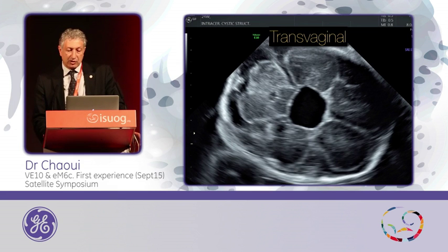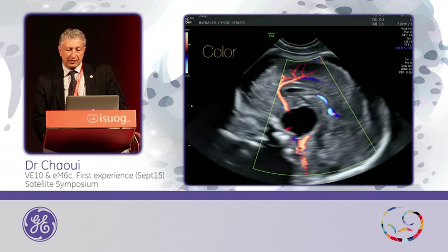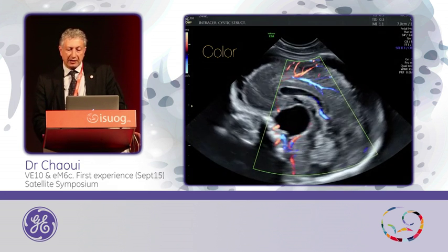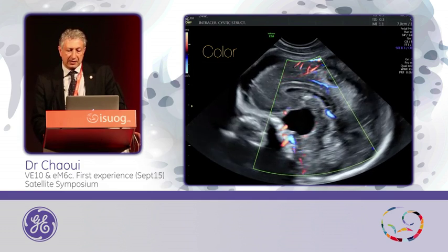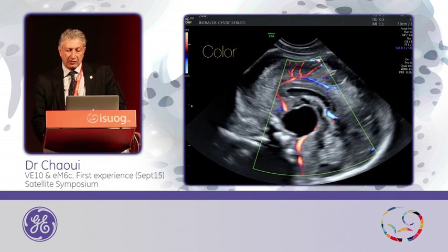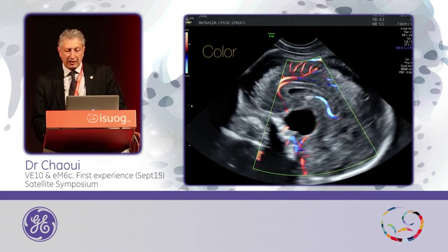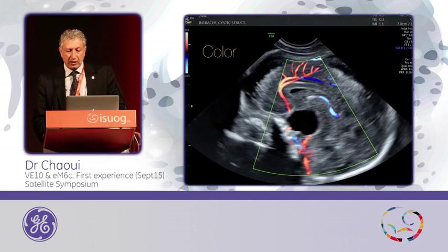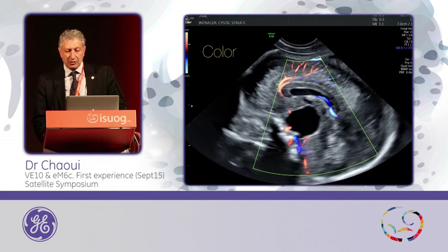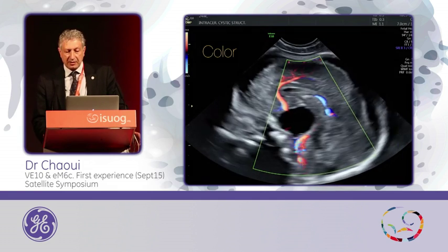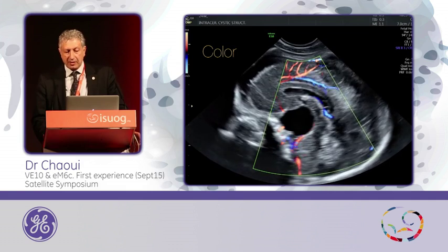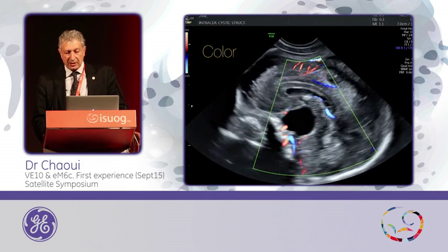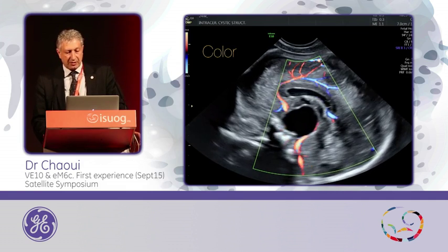Then moving transvaginally to see the appearance and adding color Doppler to see the vessels surrounding — and you see here that you can clearly see the two pericallosal arteries present in this fetus. You see the internal cerebral vein.